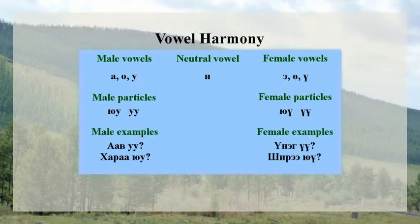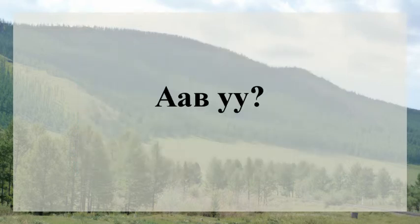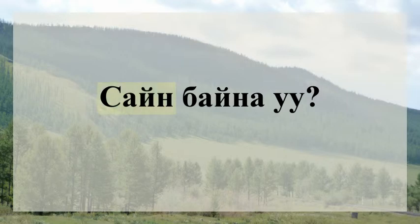Remember that male and female have nothing to do with gender — it is just a classification method introduced by linguists many years ago. When the last word of a sentence ends in a single vowel or a consonant, the particles 'o' and 'oo' are used — for example, 'awo' or 'unigo.' When the last word ends with two vowels, the particles 'yo' or 'yu' are used — for example, 'harayo' or 'shireyu.' Note that the particles naturally attach themselves to the last letter of the preceding word. A good example is the greeting 'sain bainuu,' pronounced with the particle attached to the 'n' at the end of 'bain': 'sain bainuu.'